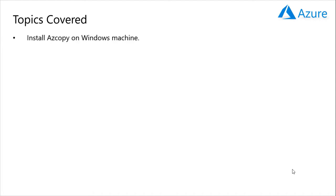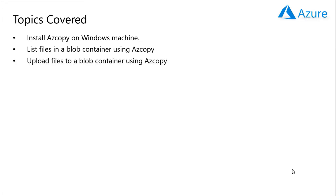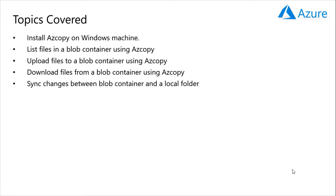So what are the topics covered? First, I will show you how to install azcopy on a Windows machine. Using azcopy, we can list the files in a blob container in a storage account. I will also show you how to upload and download files to and from a blob container. You can also sync changes from a blob container of one storage account to a blob container in another storage account, and also sync changes between a blob container and a local folder. To ensure that the synced folders are up to date, you can add the delete-destination parameter while using the azcopy command, which I'll show you a little later.